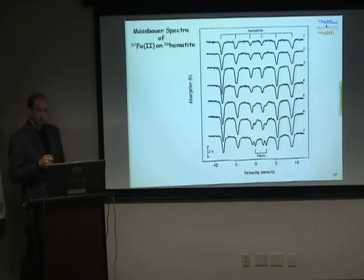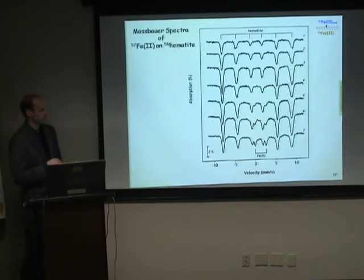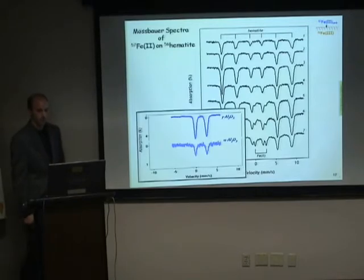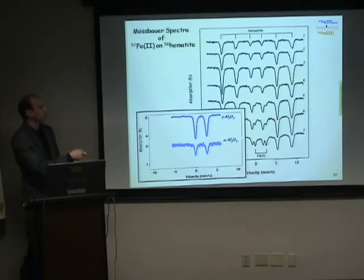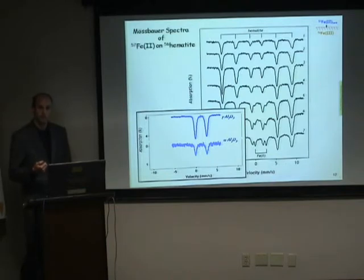At high Fe2+ concentrations we see another set of features — two more peaks in the precise location of an Fe2+ doublet, very much resembling Fe2+ sorbed on non-conducting substrates such as aluminum oxide. We take this as the first spectroscopic evidence for a truly sorbed Fe2+ species on an iron mineral, which has not been shown before.